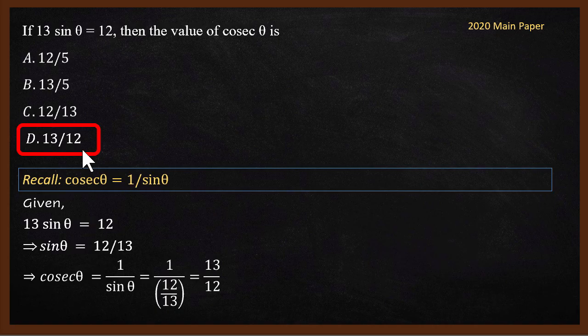So it's quite possible that there will be questions in the exam where they will give you one trigonometric ratio like sin θ, then they will ask you to find cos θ or cosecant θ or secant θ. Okay. Next question.